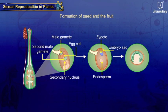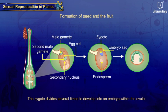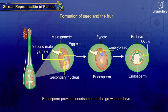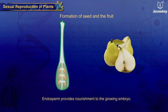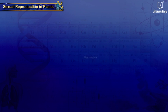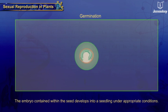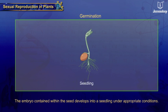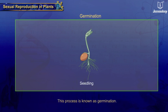The zygote divides several times to develop into an embryo within the ovule. Endosperm provides nourishment to the growing embryo. The ovule develops into a seed and the ovary into the fruit. The embryo contained within the seed develops into a seedling under appropriate conditions. This process is known as germination.